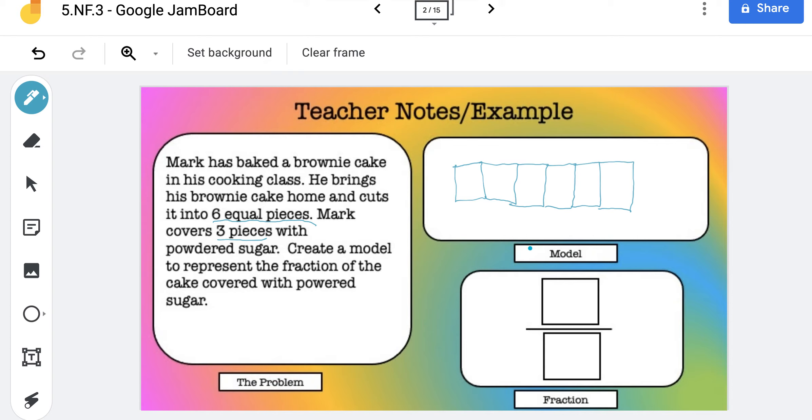Okay, and we know that three of these are gonna be covered with powdered sugar. So come over here and grab a different color. I'm gonna go with green, okay. And let's shade in the pieces that are gonna have powdered sugar. So let's have one piece here, another piece, and finally another piece. Okay, so the three pieces that are gonna have powdered sugar.